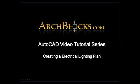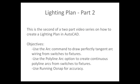Welcome to Archblocks.com AutoCAD video tutorial series, Creating an Electrical Lighting Plan. This is the second of a two-part video series on how to create a lighting plan in AutoCAD. The objectives for this tutorial: use the arc command to draw perfectly tangent arc wiring from switches to fixtures; use the polyline arc option to create continuous polyline arcs from switches to fixtures; and also use running OSNAP for accuracy.